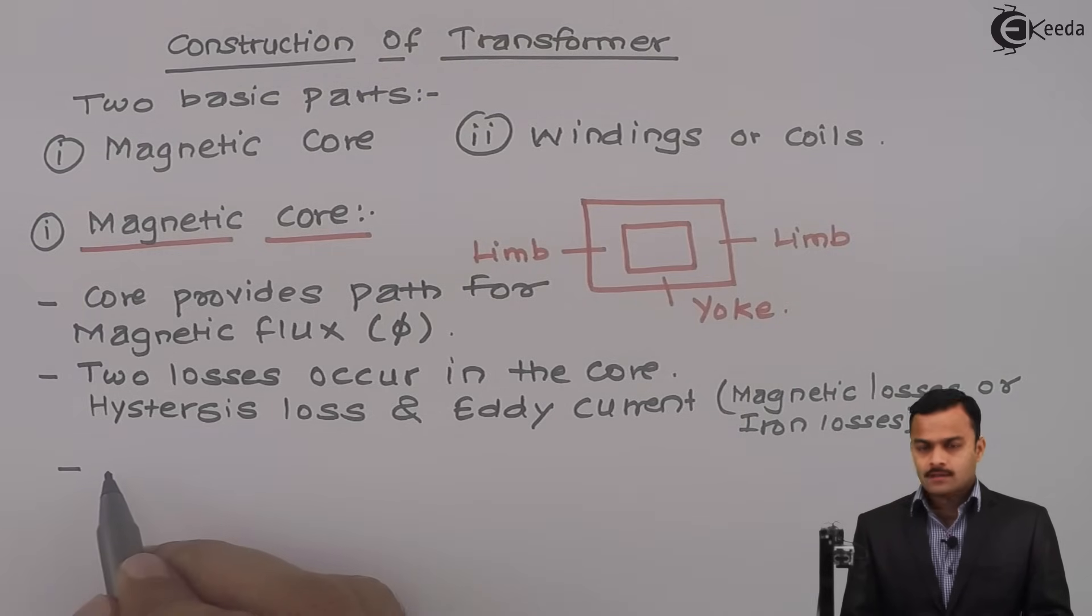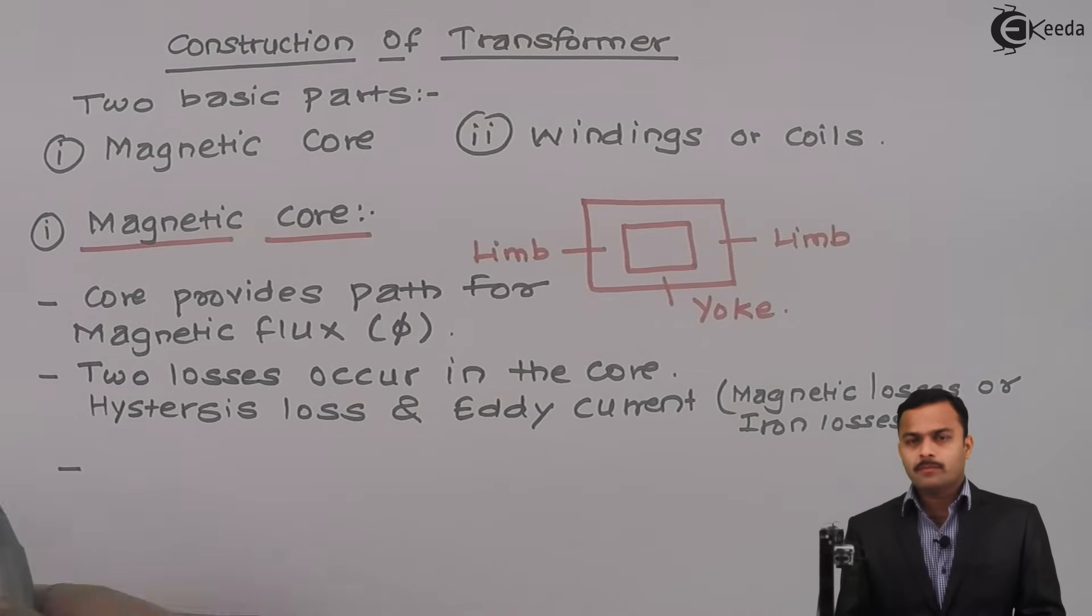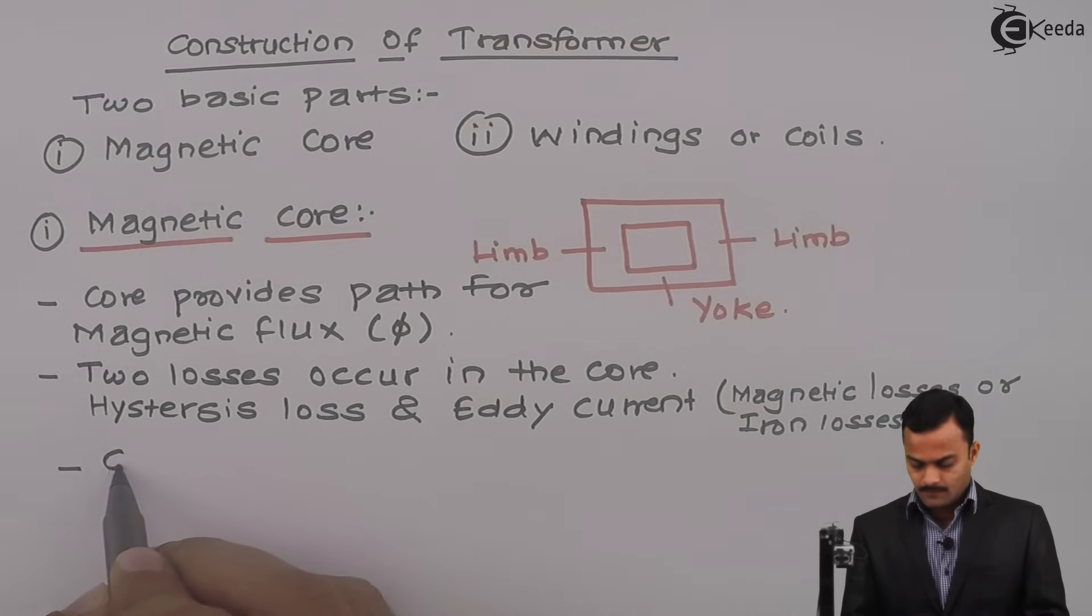Now, we need to construct or make a core such a way that these two losses are as low as possible. How we can get that? Through design. So let's discuss how to minimize hysteresis loss.